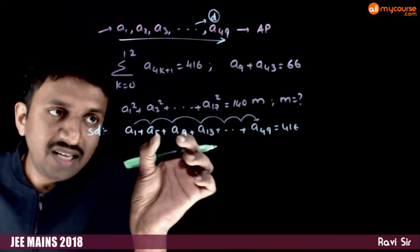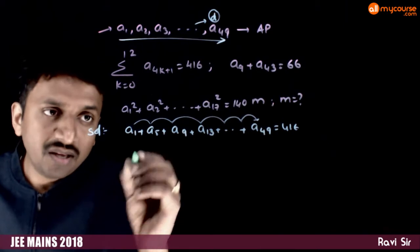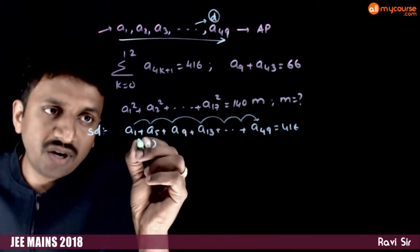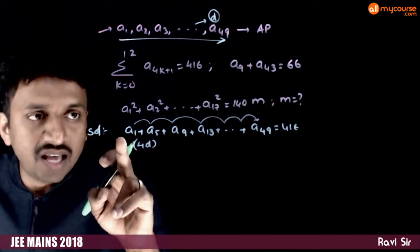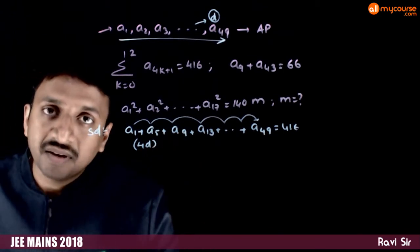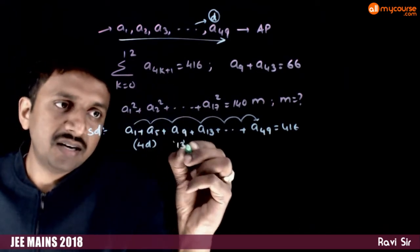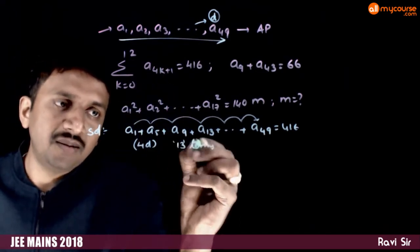This sequence is also an AP with common difference of 4d, right? Because a1 plus 4d is a5 plus 4d is a9 and so on. And this sequence has 0 to 12, 13 terms.